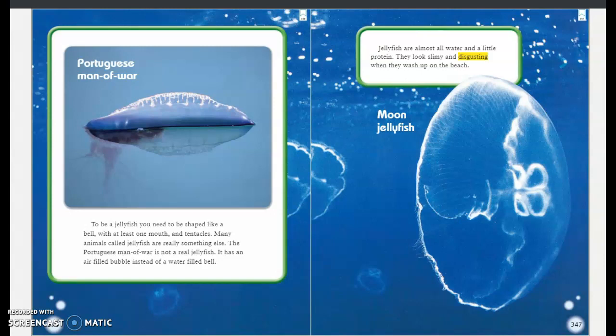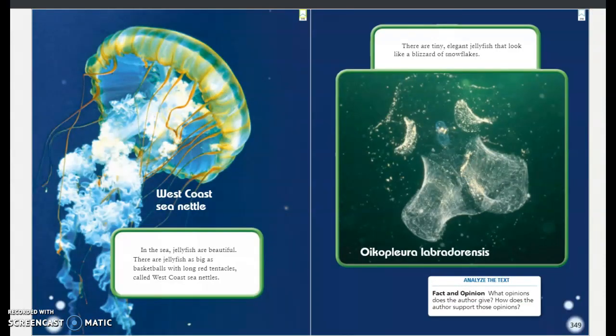Jellyfish are almost all water and a little protein. They look slimy and disgusting when they wash up on the beach. This is a moon jellyfish. This is a West Coast sea nettle.